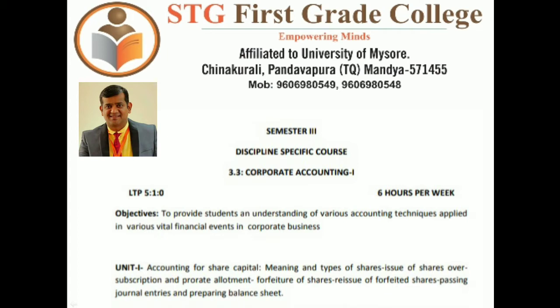In Unit 1 - Accounting for Share Capital - you are going to understand the meaning and types of shares, issue of shares, under and over subscription, pro rata allotment, forfeiture of shares, reissue of forfeited shares, passing journal entries, and preparing a balance sheet. The first 20% is theoretical — meaning, types of shares, issue of shares, over subscription — and the rest is problem-solving, which is mostly journal entry based.